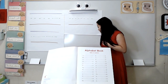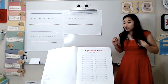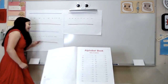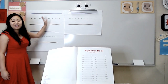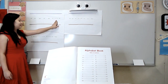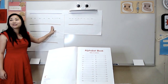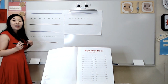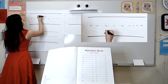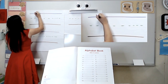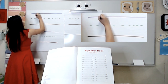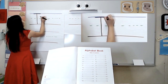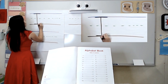Before I write these letters down, I just wanted to remind you that this is the sky, the grass, and the ground. Let's look at the letter I. For uppercase I, you're going to start in the sky, touch the ground, across the sky, across the ground.